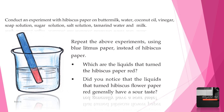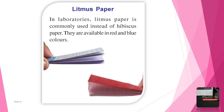Which are the liquids that turned hibiscus paper red? Notice that the liquids that turned hibiscus flower paper red generally have a sour taste. In laboratories, litmus paper is commonly used instead of hibiscus paper. They are available in red and blue colors.